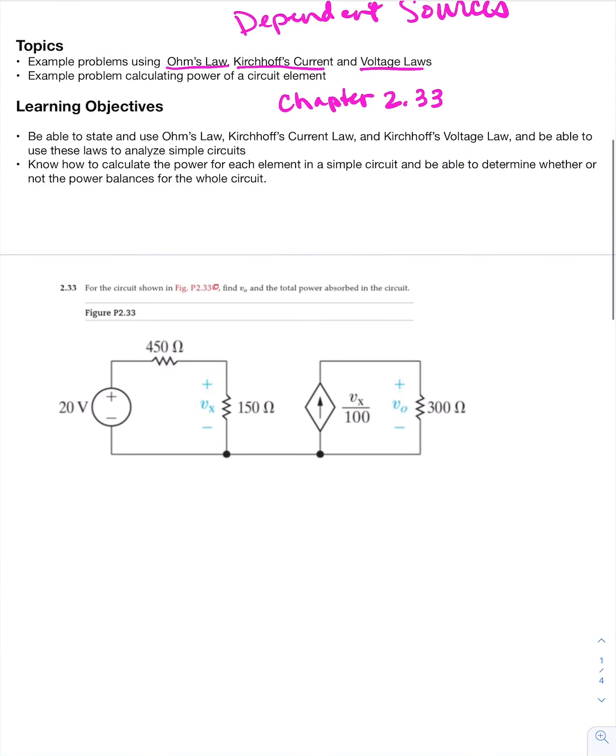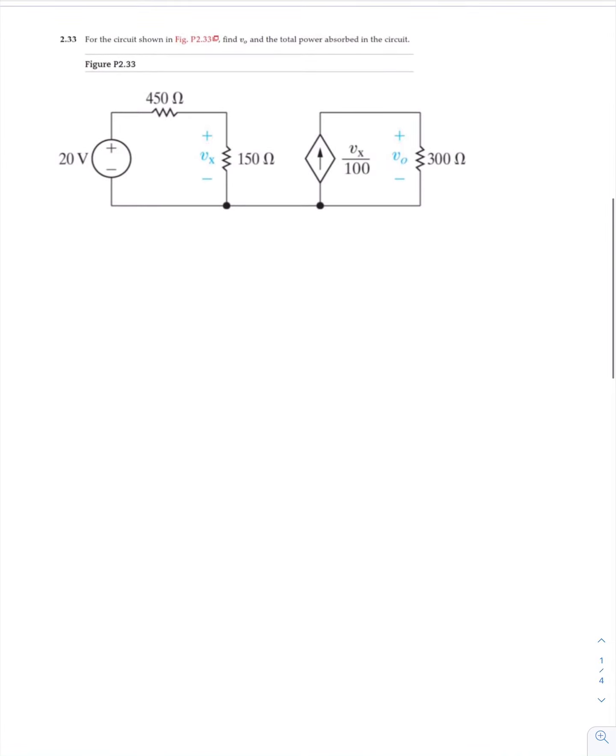Okay, let's get started on this problem. For the circuit shown, find V sub zero and the total power absorbed in the circuit. V sub zero is right here.